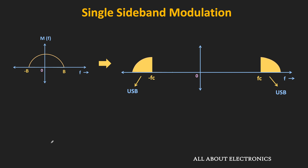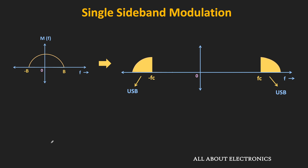In single sideband modulation, if B is the total bandwidth of the message signal, then the required bandwidth for the transmitted signal is also equal to B. That means single sideband modulation is bandwidth efficient modulation, and this scheme is used wherever spectral efficiency is important.